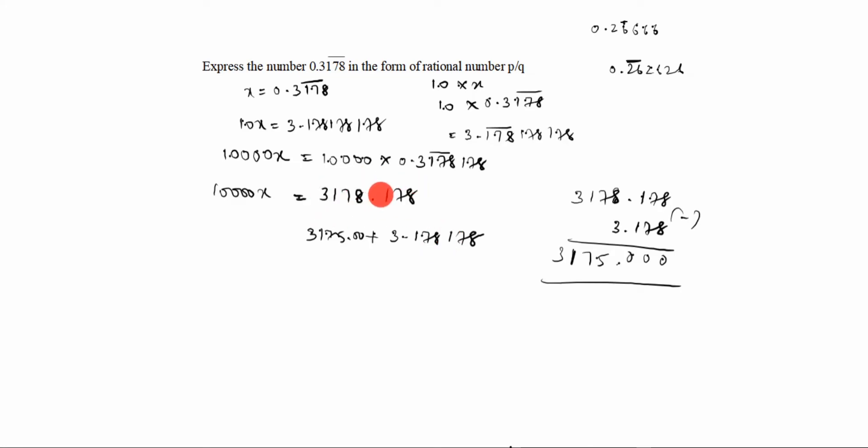Don't confuse in this. This 10x you have to write it here. After that you have to minus these two. The answer comes equal to 10,000x. You see 3175.00, you see 3178.178, you see what the number comes 10x. Correct. So you have to write 3175.00 plus 10x equal to 10,000x.